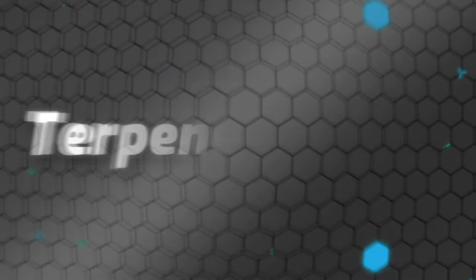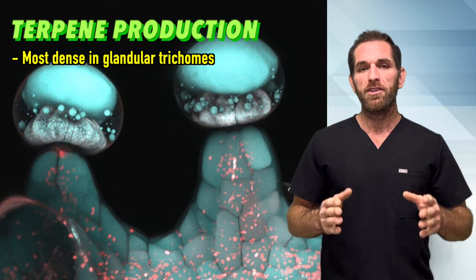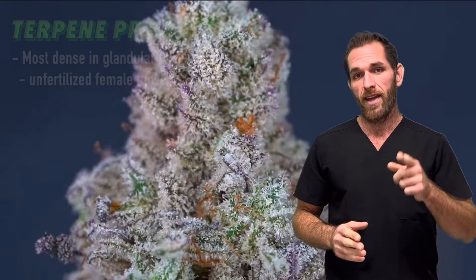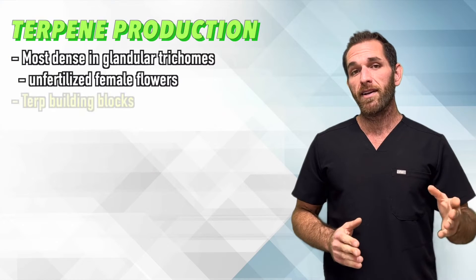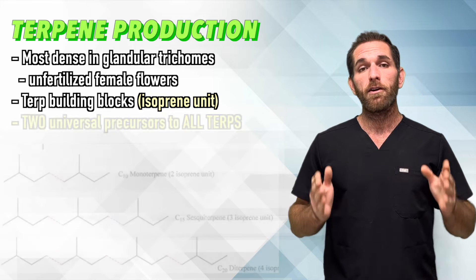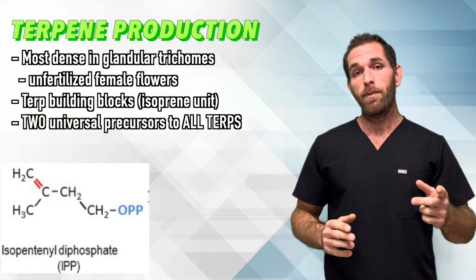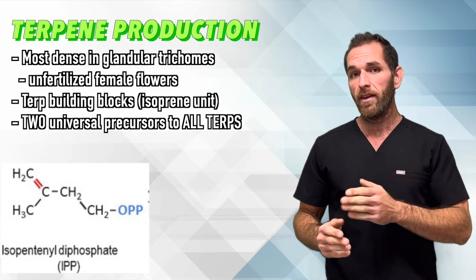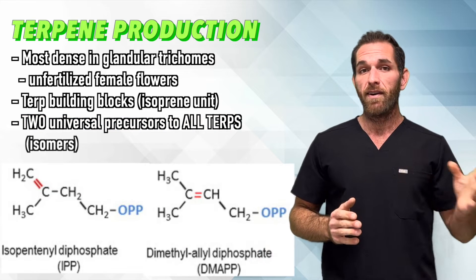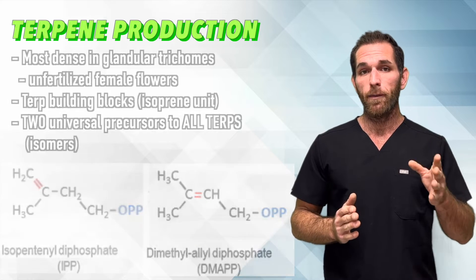If you remember from the last video, the primary site of biosynthesis for terpenes as well as cannabinoids are the glandular trichomes of cannabis. Production is most concentrated in the unfertilized female flower. The building blocks of terpenes are tiny hydrocarbon molecules called isoprene units. To get more specific, there are two universal precursors for all terpenes: isopentanyl diphosphate (IPP) and dimethylallyl diphosphate (DMAPP). Each of these has five carbon atoms.